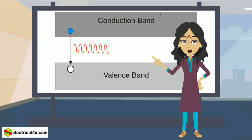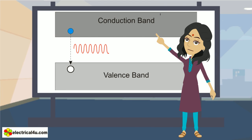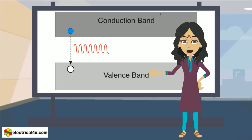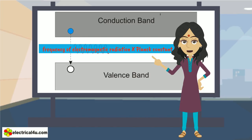This energy is equal to the forbidden energy gap between conduction band and valence band. It is to be noted that conduction band is at higher energy level than valence band. We know that the energy of a photon is the product of frequency of electromagnetic radiation and Planck constant.